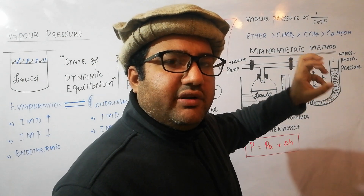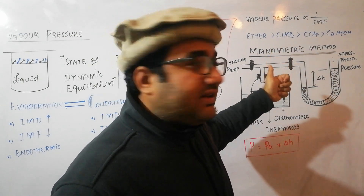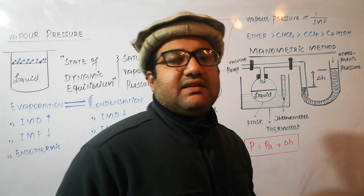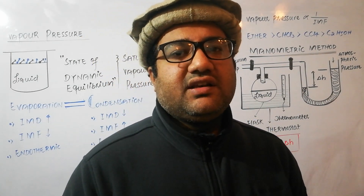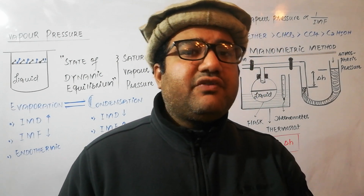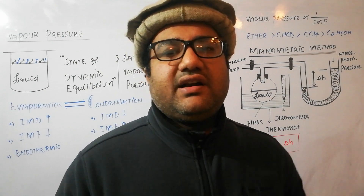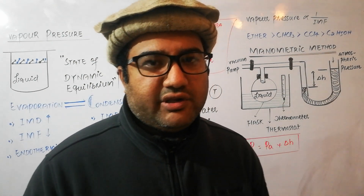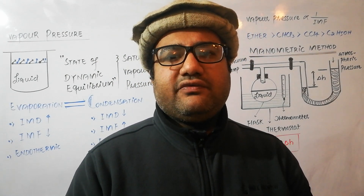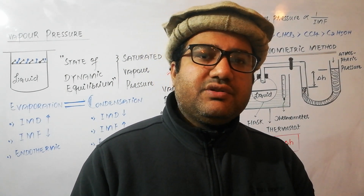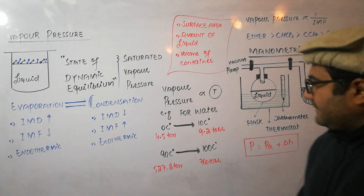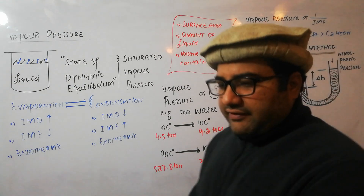Ethanol has the minimum vapor pressure, meaning intermolecular forces in ethanol are the strongest. So the vapor pressure data for different liquids at a given temperature provides an idea about the strength of their intermolecular forces. At the macroscopic level, intermolecular forces are studied using data from the physical properties of substances.